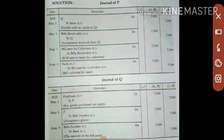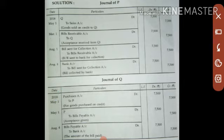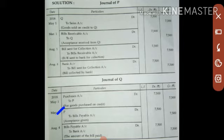In Q's books: Purchases Account debit to P Account. When P receives the bills of exchange, Bills Receivable Account is debited. As per the rule 'debit what comes in,' Bills Receivable Account is debited and Q Account is credited — since the bill is receivable from Q. In Q's books for accepting the bill: P Account debit to Bills Payable Account.